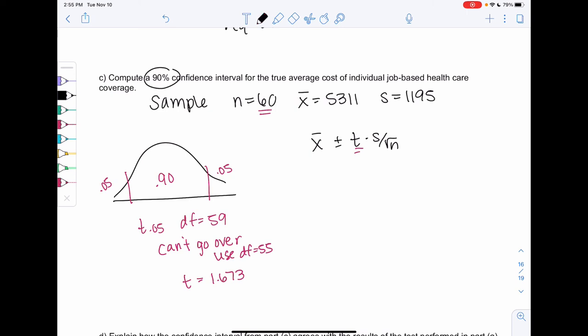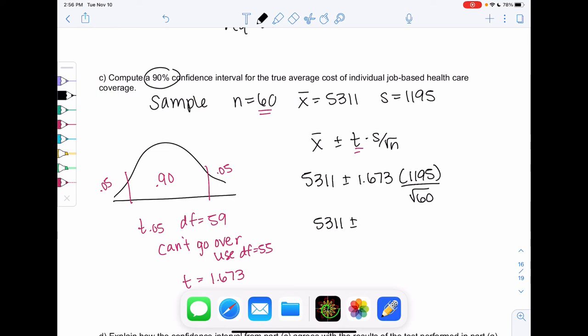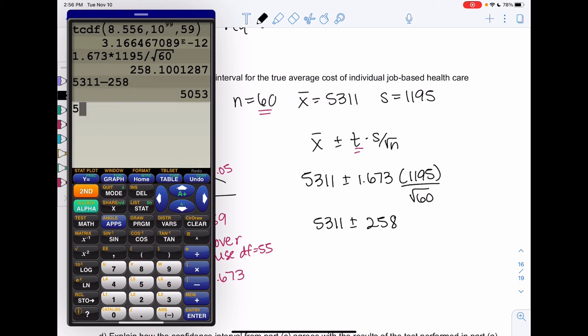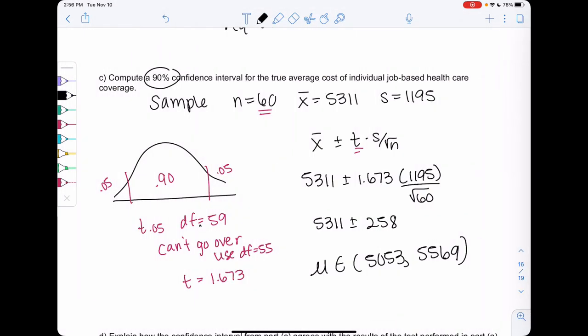T was 1.673. Let's plug in. The average is 5,311 plus or minus 1.673 times 1195 over square root of 60. I'm adding and subtracting about 258. And so we're talking about means. Mu is in the interval, 5,053 up to 5,569. Then we'll compare this to the hypothesis test.